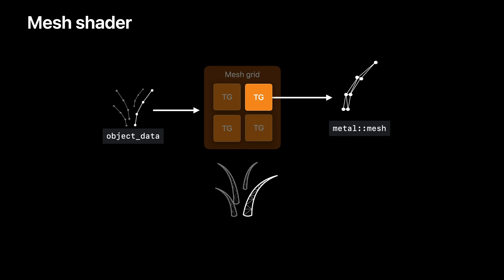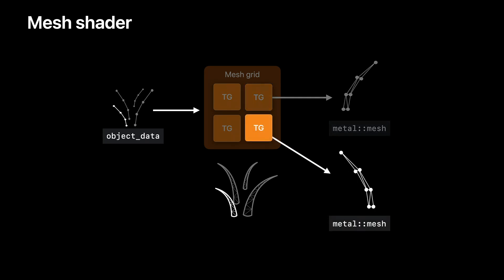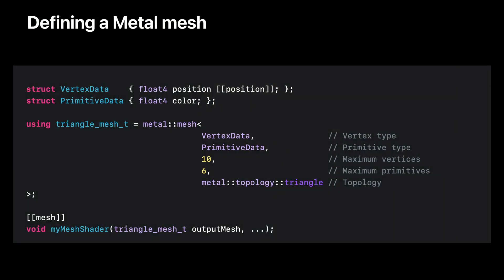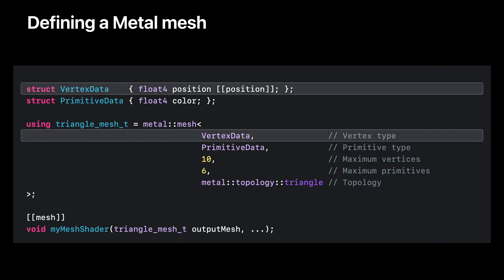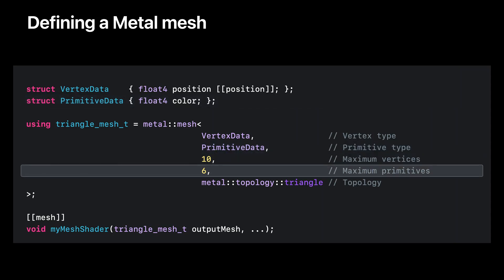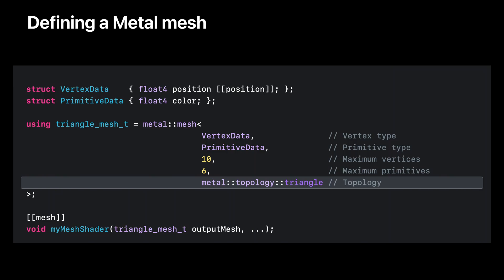The next step, after getting the object shader stage ready, is initializing the mesh shader stage. The mesh shader has the user-defined payload as an input — in this example, the payload is the set of curve control points. Each mesh thread group produces a metal mesh, which is a single strand of hair. The output mesh of the mesh shader must have a metal mesh type. A metal mesh is a built-in structure in Metal that provides an interface to output vertex and primitive data to the rasterizer and fragment shader. Each metal mesh defines a vertex data type, a primitive data type, the maximum number of vertices, the maximum number of primitives, and the mesh topology — either point, line, or triangle.